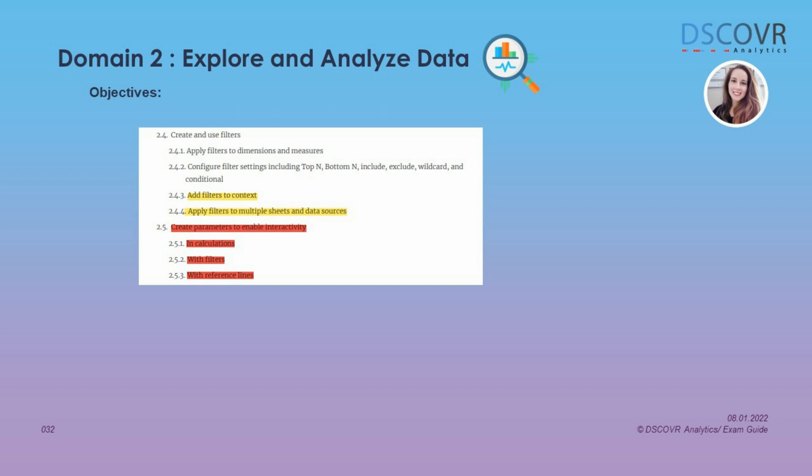For section 2.5 — you'll notice a lot of red here — that's because parameters are super important for this exam. You will see a lot of questions asking you to create a parameter, troubleshoot a parameter, or how to link your parameter control to your visualization. You need to know how to use parameters in calculations, with filters, and with reference lines.